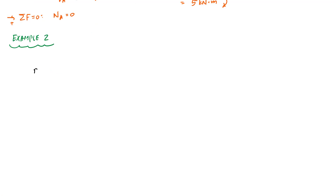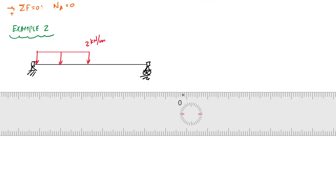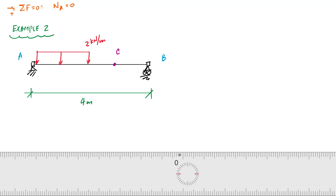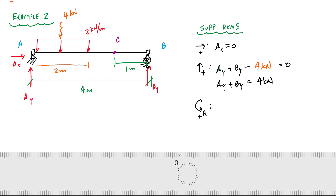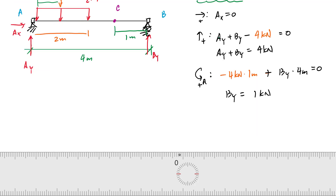Let's do another example — a simply supported beam with a uniformly distributed load halfway across, four meters long. I want to find the internal loading at point C. First, determine the support reactions. Sum of forces in the horizontal gives AX equals zero. The distributed load has a length of two meters, so the resultant is two times two equals four kilonewtons. Sum of forces in the vertical: AY plus BY minus four kilonewtons equals zero. Taking moments about A: negative four kilonewtons times one meter plus BY times four meters equals zero, giving BY equals one kilonewton and AY equals three kilonewtons.